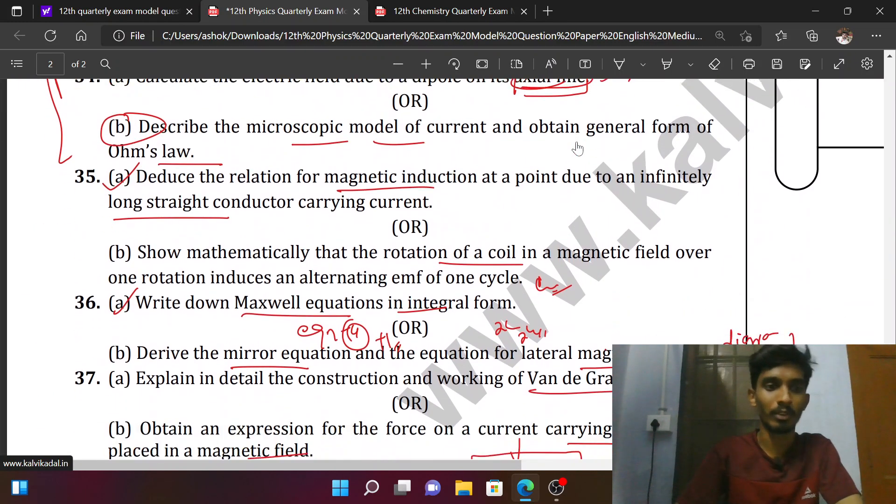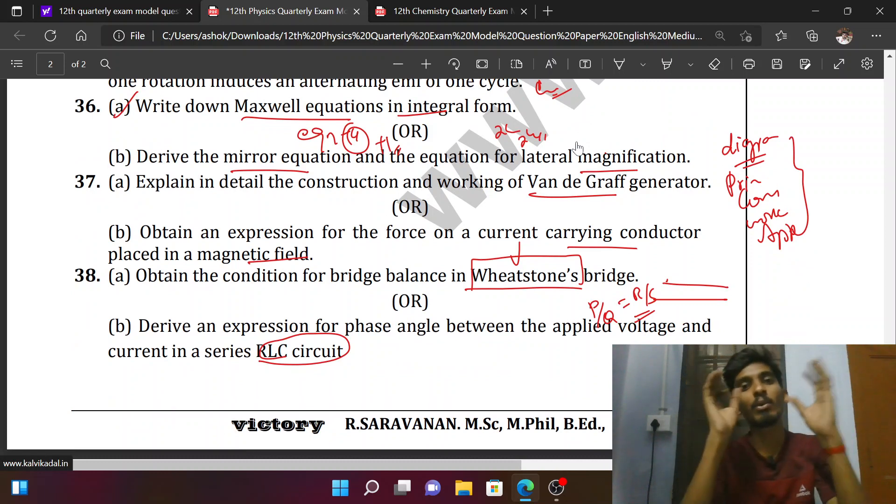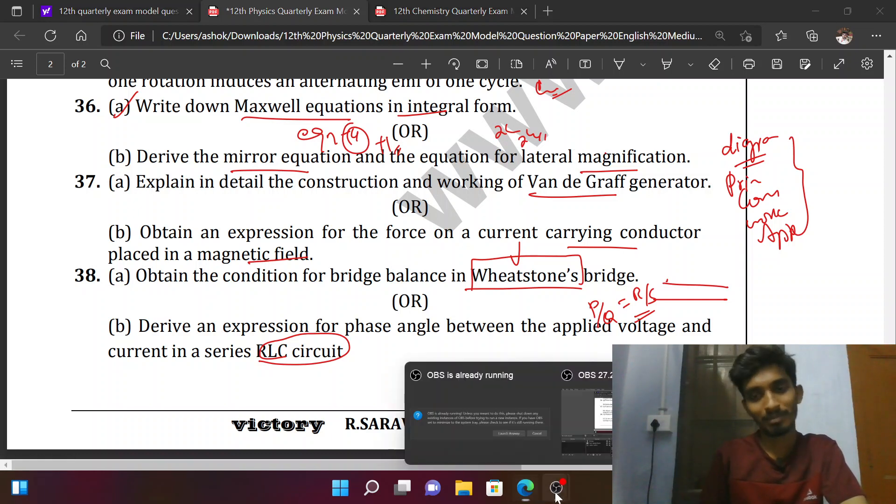We will present the 5 marks or theory. We will ask the diagram, principle, construction, working, and cyclotron. Then we will ask the question to give and to find the formula, then we will proceed to the last formula. We will ask the heading. We will try to enhance the paper. All the best! Thank you!